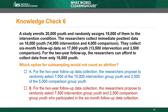Choice B is incorrect because the sub-sampling using this approach counts as attrition. The researchers propose to select from among the youth who responded to the 6-month follow-up. Because this is not a sub-sample from the original sample, the researchers are not applying the exclusion criteria in the same way to both the intervention and comparison groups. The WWC would assess attrition at the 2-year follow-up time point relative to the 20,000 youth who originally went through random assignment.